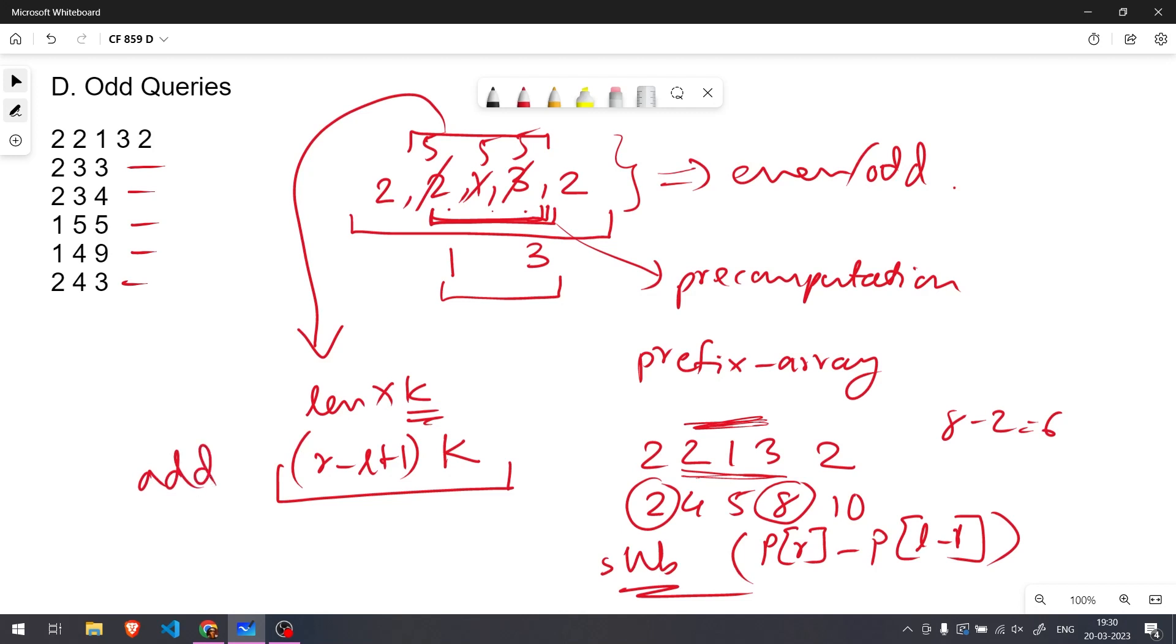And this is the part to be added. So what we do is we take total sum plus add minus subtracted part and then we check if entire thing is divisible by 2 or not. If it is divisible by 2 then it's not odd otherwise it's odd.